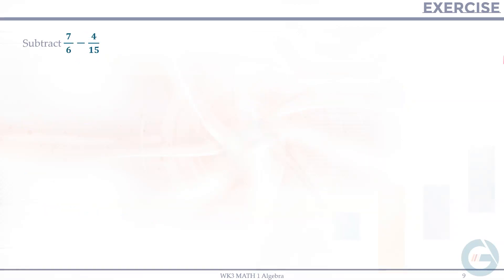When subtracting or adding rational expressions, you cannot simply subtract or add the numerators and denominators separately as in multiplication. The denominators must be the same — common to both terms. To find a common denominator, we can multiply the denominators together. For example, with 6 and 15, the common denominator is 6 times 15 = 90.